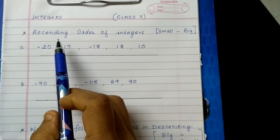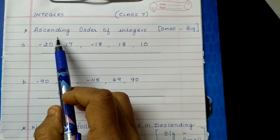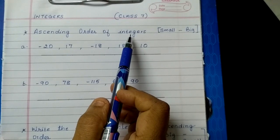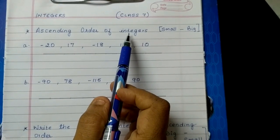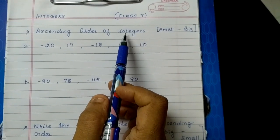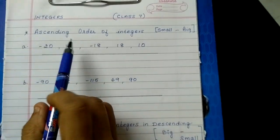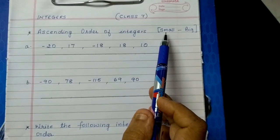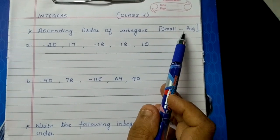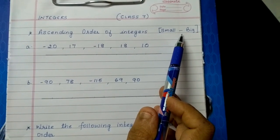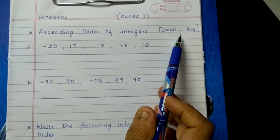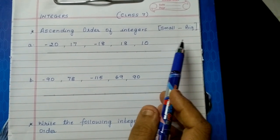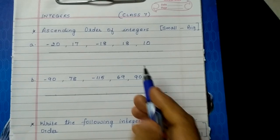Today children we are going to the next part of ascending order of integers. In the last video I had taught that ascending order means from small to big, and that is moving from left to right on a number line.